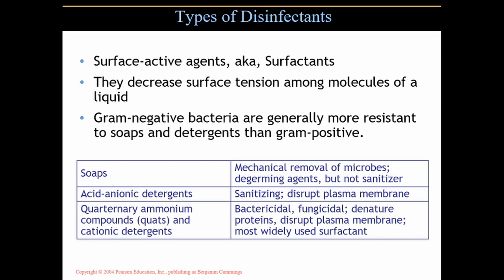Quaternary ammonium compounds, called quats, are cationic — positively charged — detergents. They kill bacteria, kill fungi, denature proteins, and disrupt the plasma membrane. They're used in a number of products and are the most widely used surfactant in production today in so many different applications. They're very effective in a number of different ways, which makes them so useful and abundant.